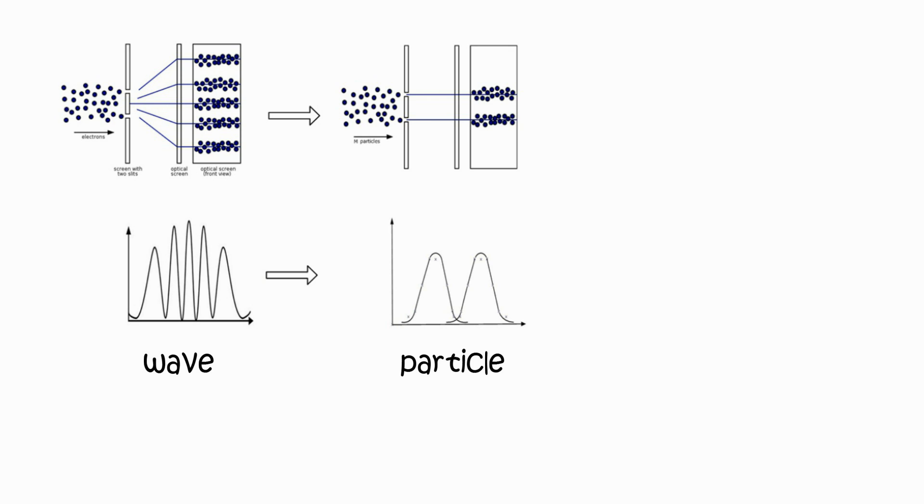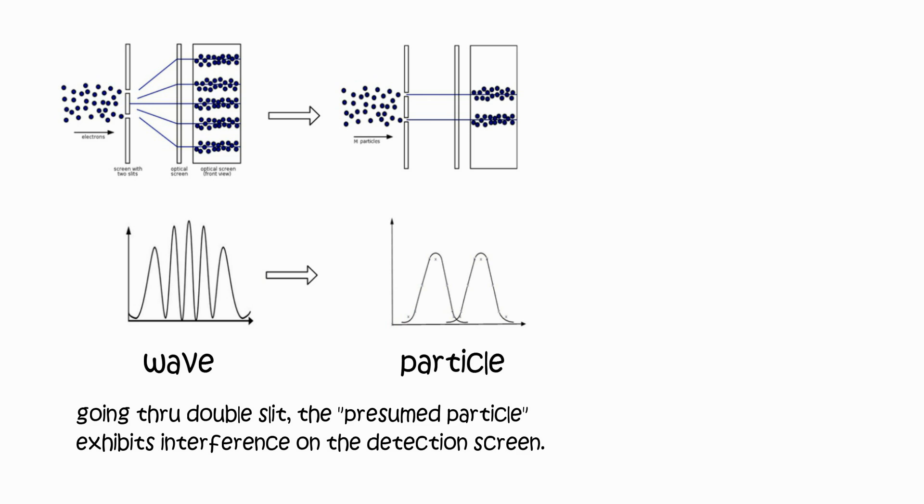Electron is a particle, as generally defined. After going through double slit, it exhibits interference patterns on the detection screen.